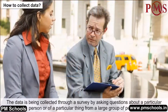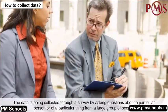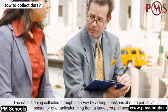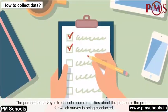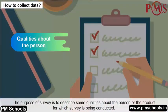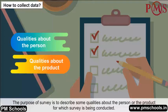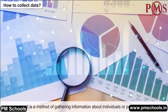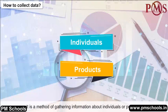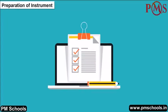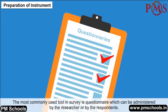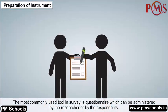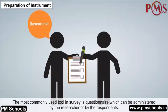Data is collected through a survey by asking questions about a particular person or thing from a large group of people. The purpose of a survey is to describe some qualities about the person or product for which the survey is conducted. It is a method of gathering information about individuals or products. The most commonly used tool in a survey is a questionnaire, which can be administered by the researcher or by the respondents.